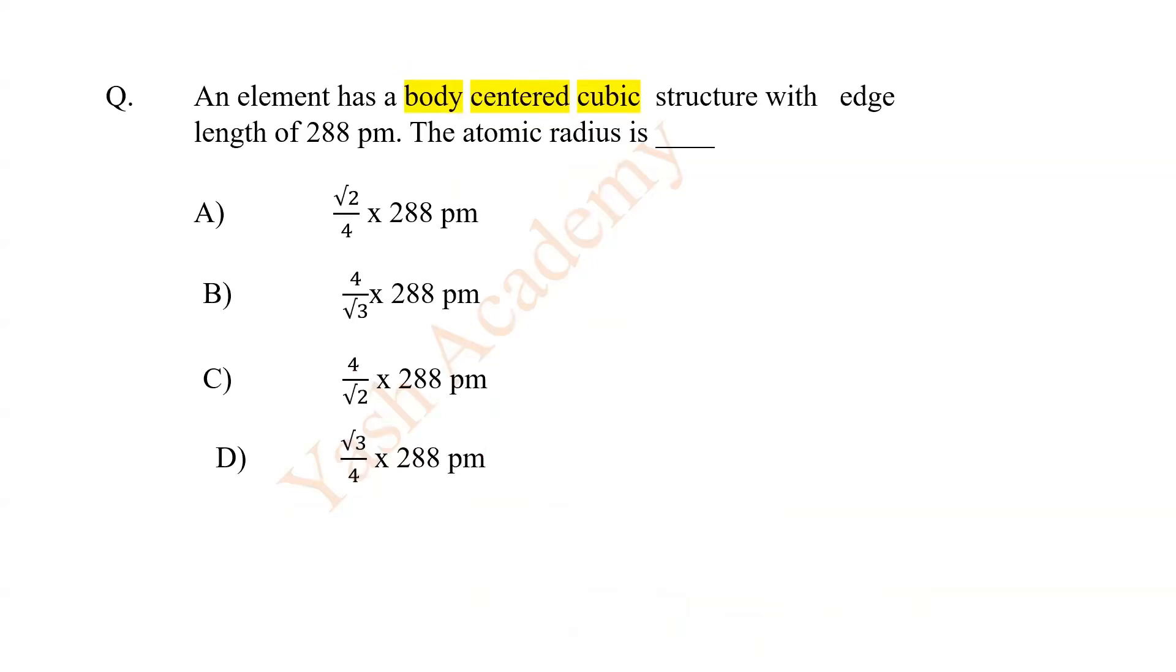Now read this question. An element has a body-centered cubic structure with edge length of 288 pm. The atomic radius is D.